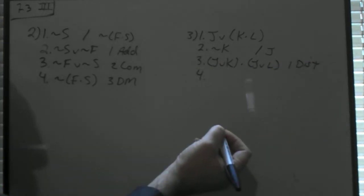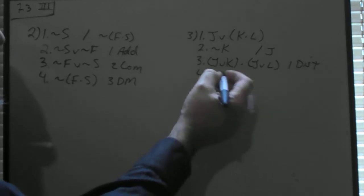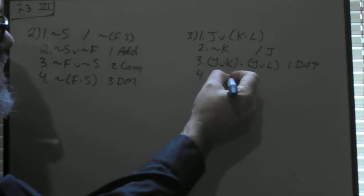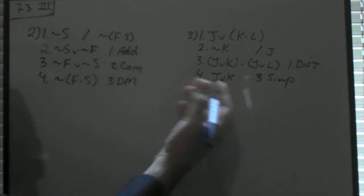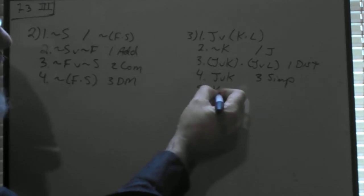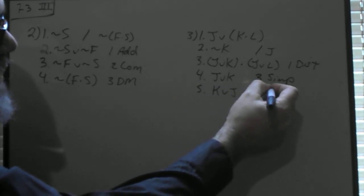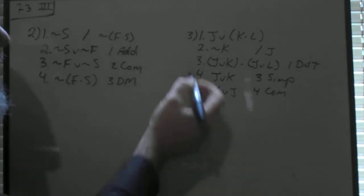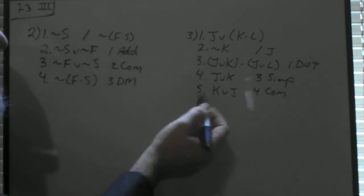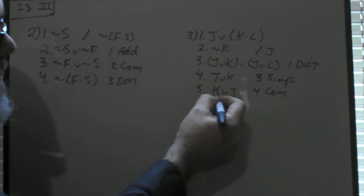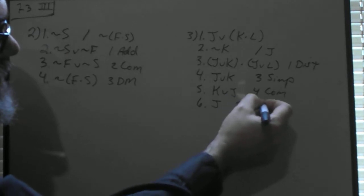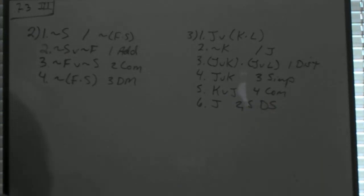And then if we simplify J or K from line 3, and then if you choose to, you could use commutativity here, K or J. If you didn't, I wouldn't hold that against you. And then 2 and 4, or 2 and 5 depending upon whether you use the commutativity or not, through a disjunctive syllogism, will give you your answer. So let's just use 5. K or J, not K, therefore J, 2 and 5 disjunctive syllogism, and that one's done.